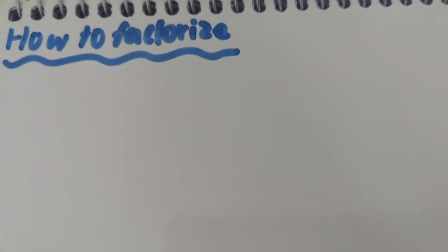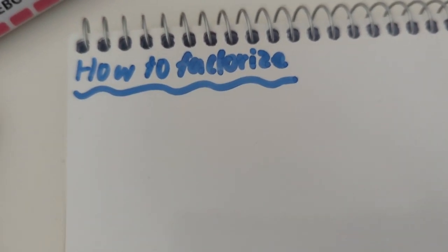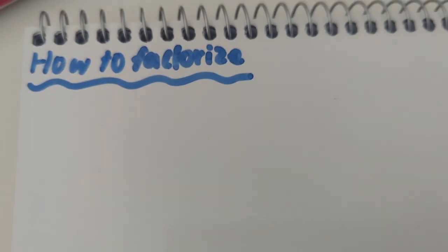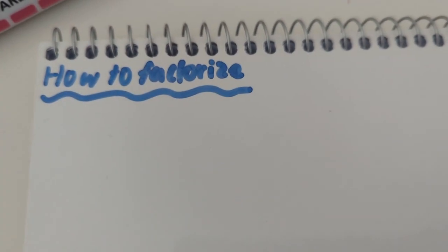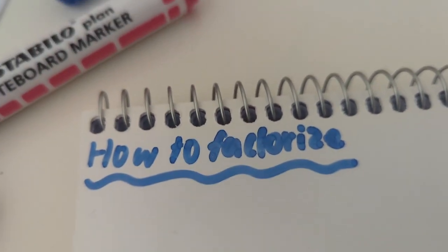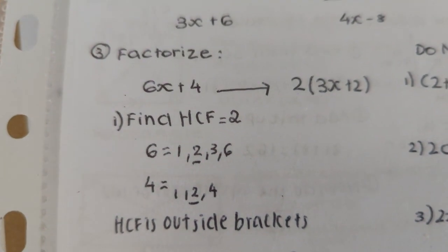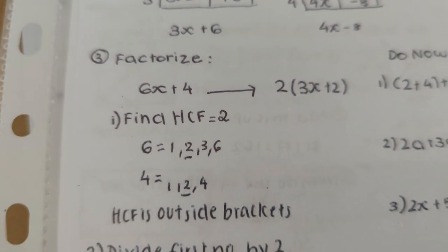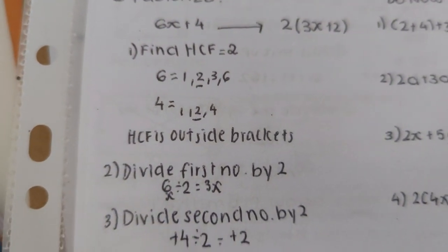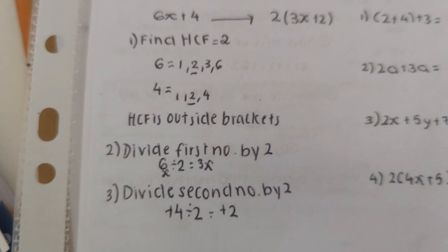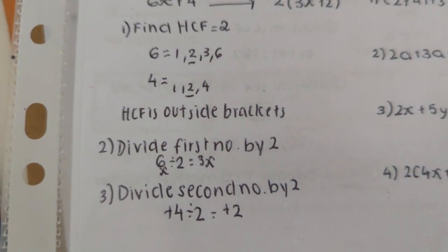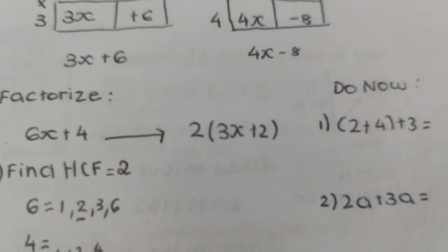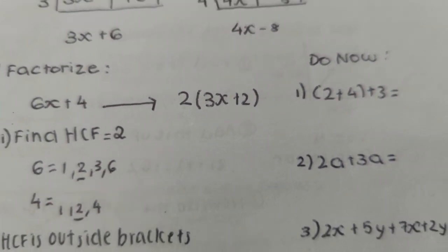Hi guys, welcome back to my channel. I'm going to do an updated version on how to factorize equations. I've actually done this before but I thought it didn't look good, so I'm doing this again. I'm going to use the same example as before: 6x plus 4. I've got all the steps here which I'll put in the description box. The answer is 2 brackets 3x plus 2, and we're going to solve it step by step.